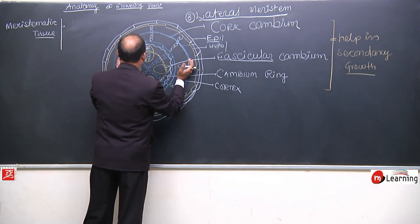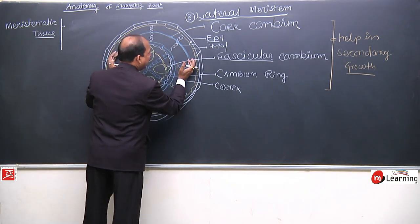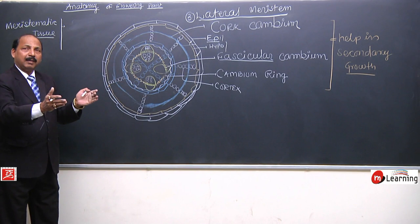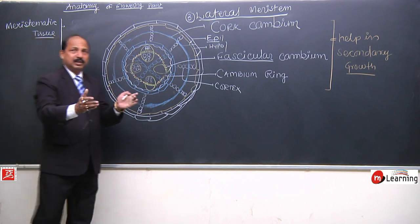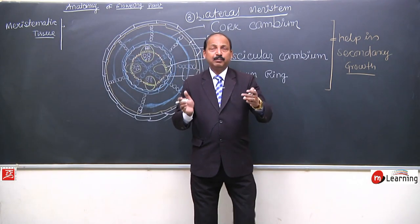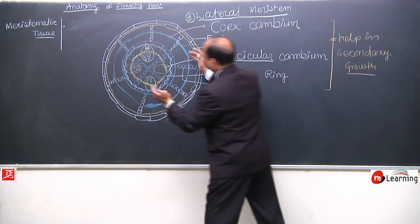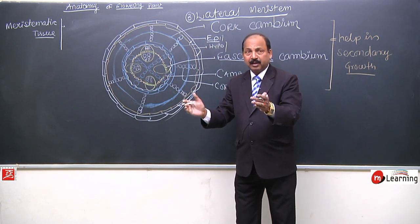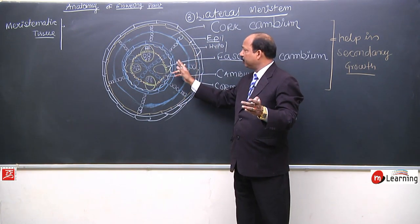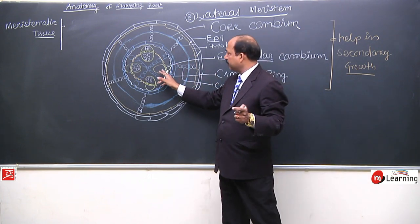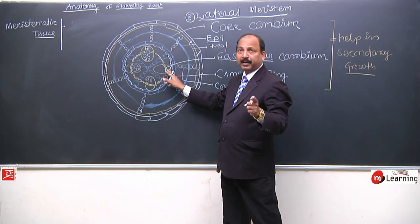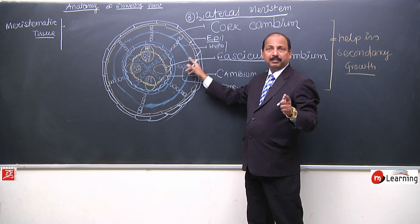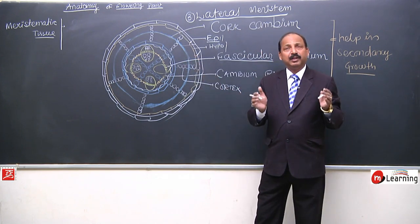Now look at the cambium, and then look at the cork cambium's position. When the plant is stood up again — where is it? It is in a lateral position. Whether you look from any direction, it is lateral in position. So all these — fascicular cambium, cambium ring, cork cambium — are lateral in position.